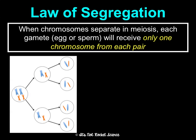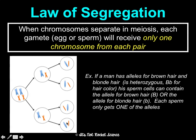That's the law of dominance. Now, onto the law of segregation. It says when chromosomes separate in meiosis, each gamete — egg and sperm — will receive only one chromosome from each pair. This original parent cell has two sets of homologous chromosome pairs, but at the end, they only end up with one copy from what they started with. So if a man has alleles for brown hair and blonde hair, meaning he's heterozygous — big B, little b — his sperm cells will only contain either a big B or a little b, because the second allele is going to come from whoever he's mating with.